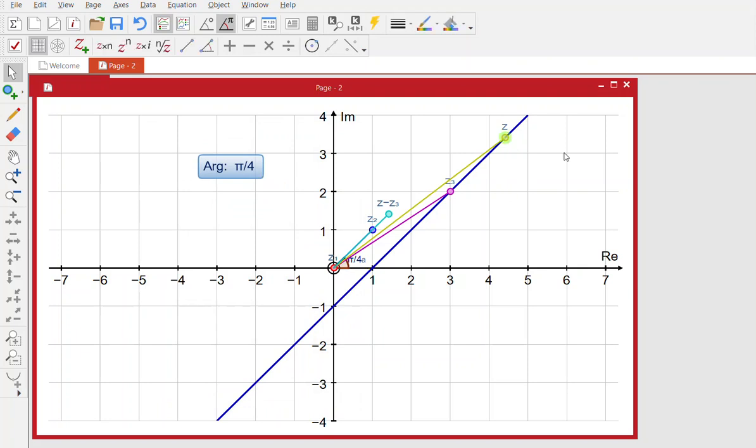So now I can see if I move my z, if I change my z, I can see that the z minus z3 remains that argument pi over 4. But if I go further down and I go lower than that, I can see that my argument's changed. So that means that the locus of the argument z minus z1 is just a half line starting at z3, my fixed point, with an argument of pi over 4.